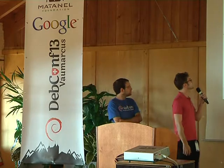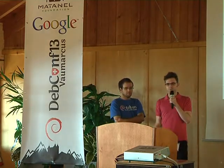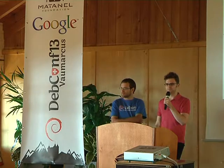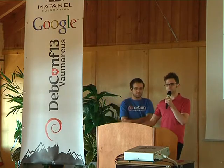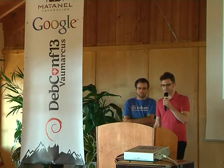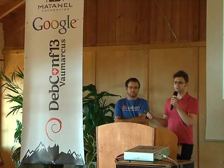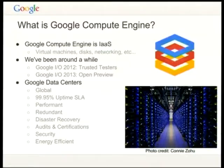Google Compute Engine is infrastructure as a service. You sign up for our service, tell us how many virtual machines you want, what they look like, how they're networked together, and we give them to you, and you give us some money. We've been around for about two years. We launched at Google I/O 2012, and at Google I/O 2013, back in May, we made the product available to anybody who has a credit card.